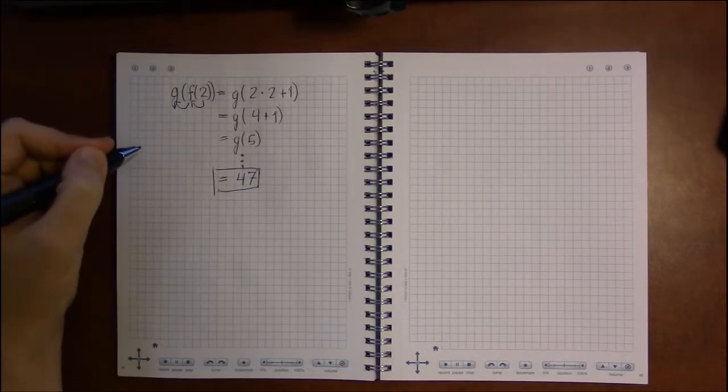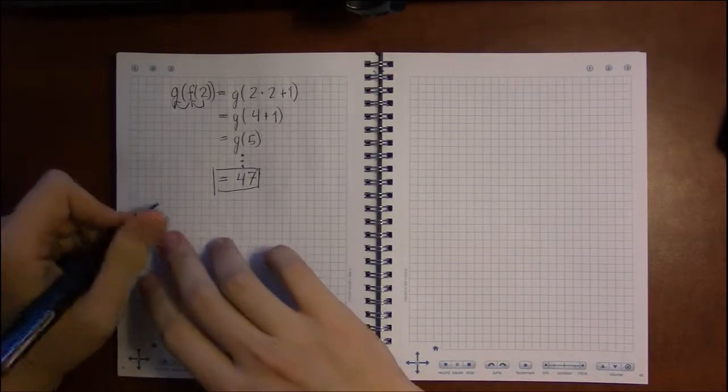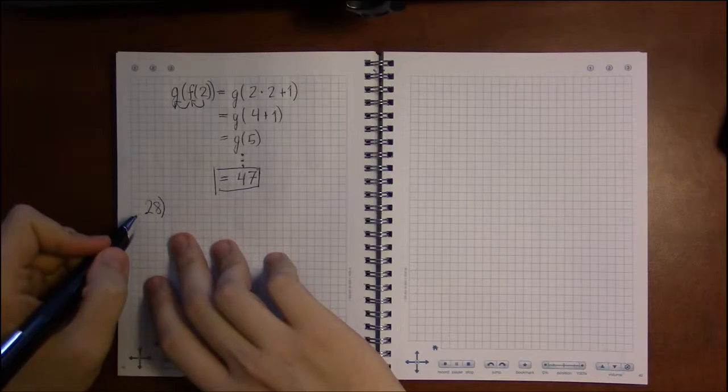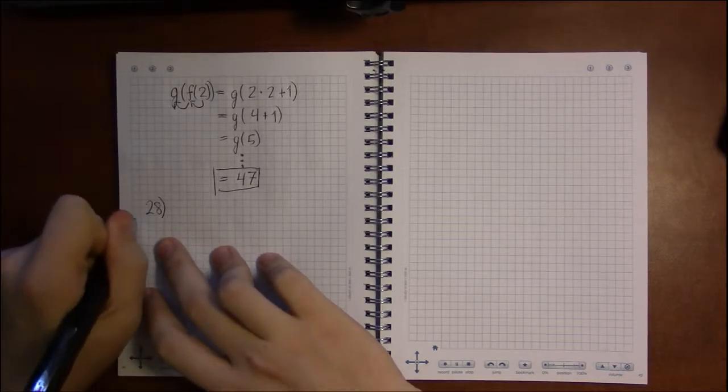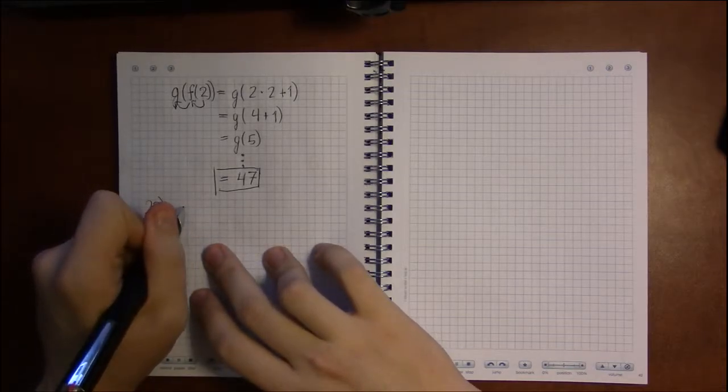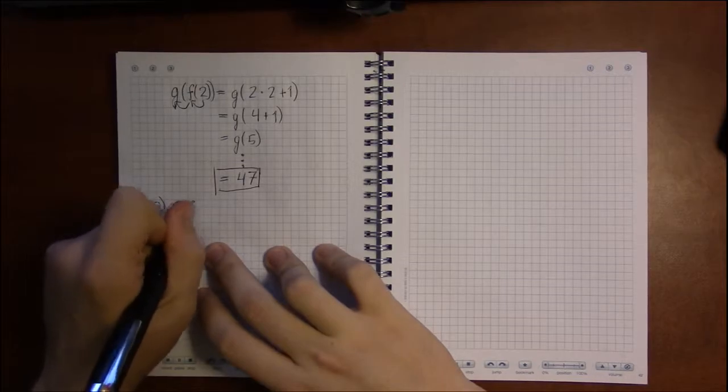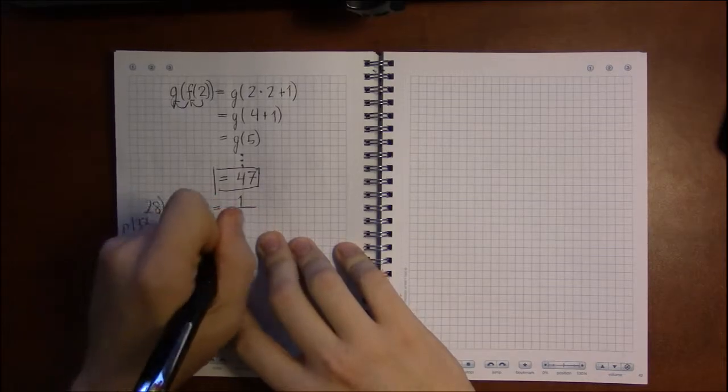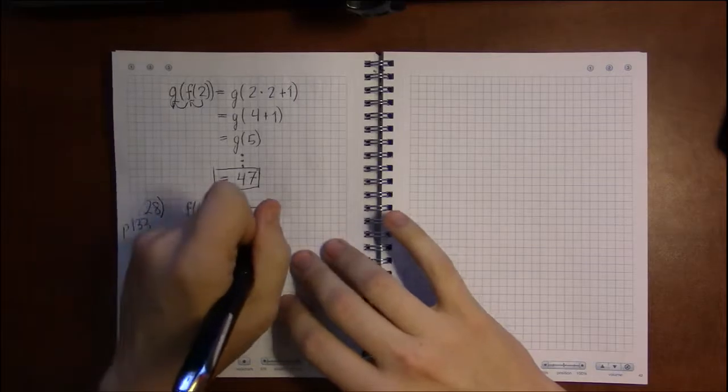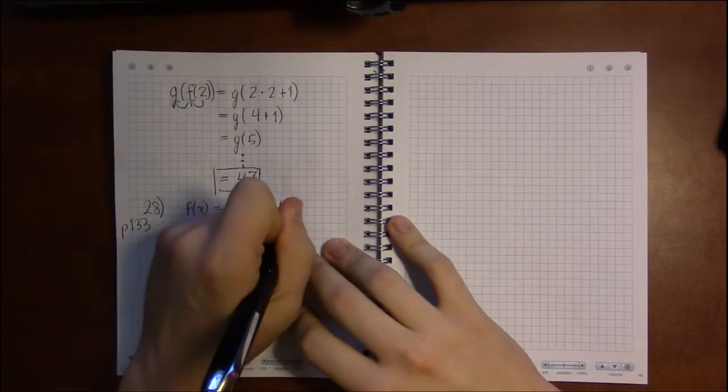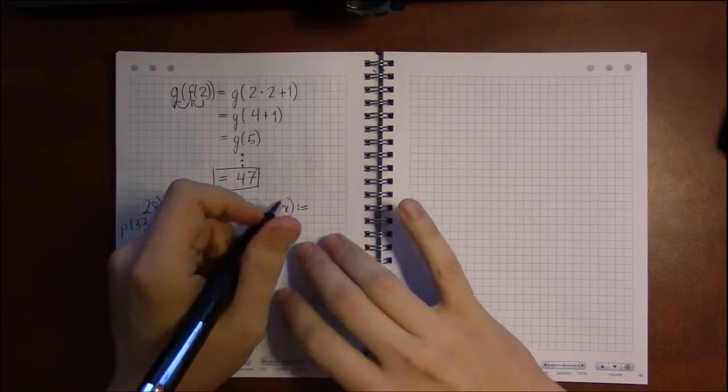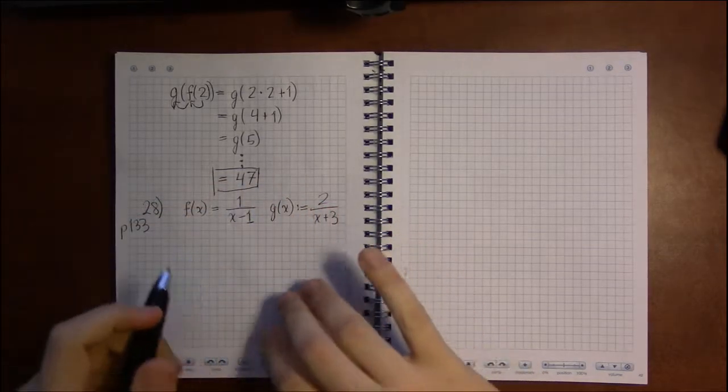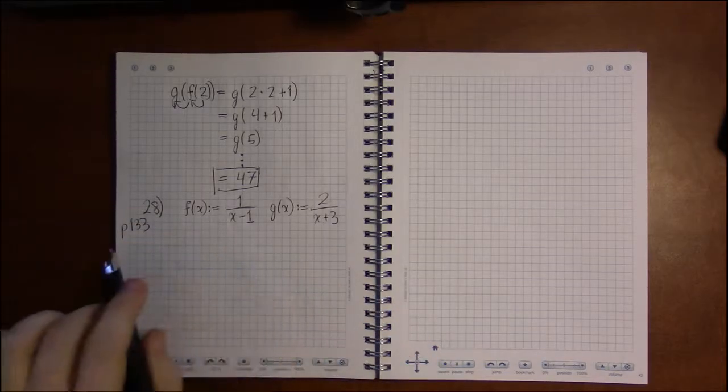We'll do a bunch of examples in the next video on this. But I do want to talk about exercises like number 28 on page 133, where in this case we're not composing at a single number. We're just doing f of g of x, so we're doing an arbitrary input, and we're asked to find the domain of the composition.